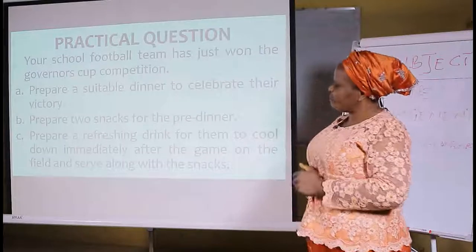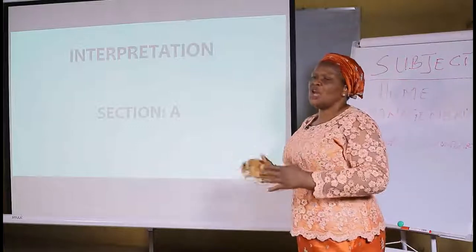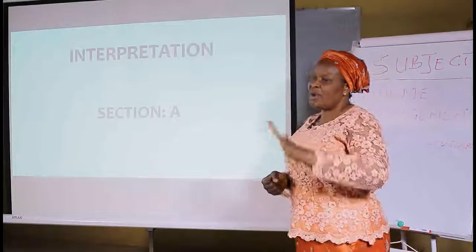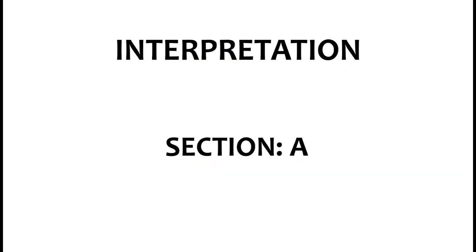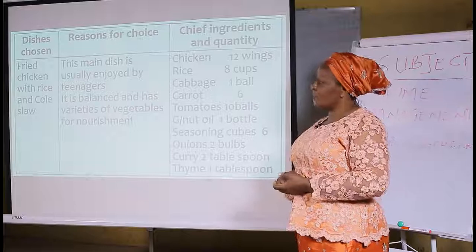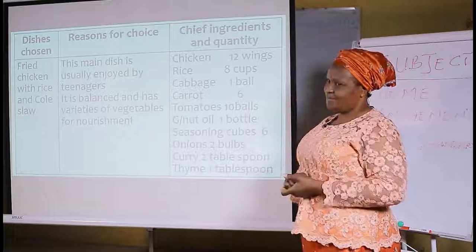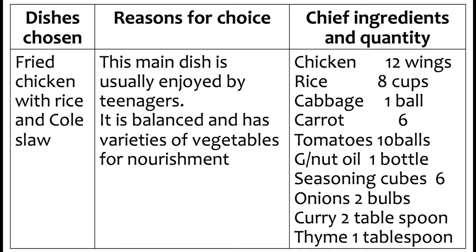Having known what we are to prepare, we go into the interpretation properly. In any practical test interpretation, there is a rough space to do all your work before transferring to Section A. Section A is equally divided into three sections: dishes chosen, reasons for choice, and chief ingredients and their quantity.